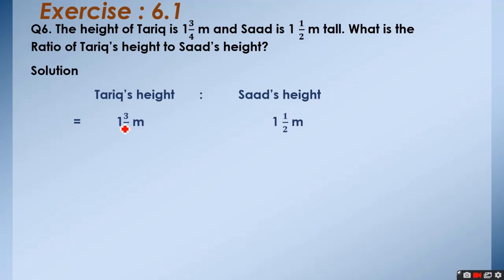4 multiplied by 1, 4 once 4 plus 3. To change mixed fraction into improper fraction, we multiply the denominator by the whole number and then we add numerator in the answer.